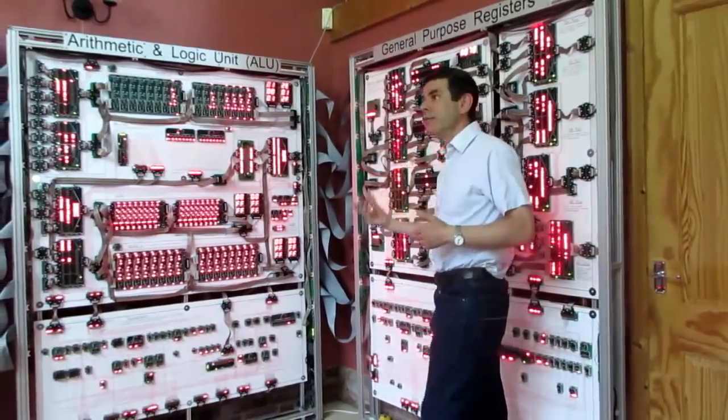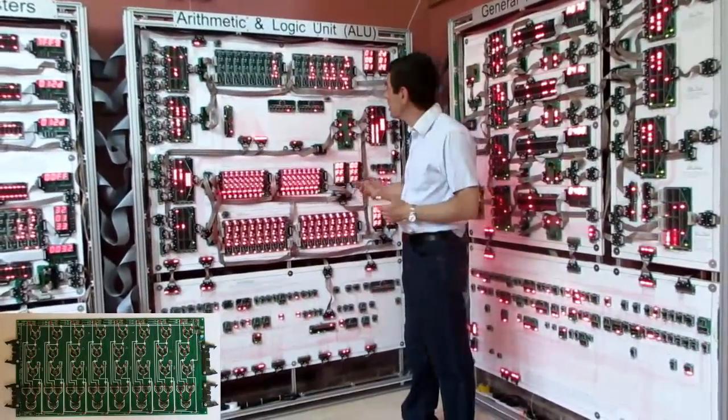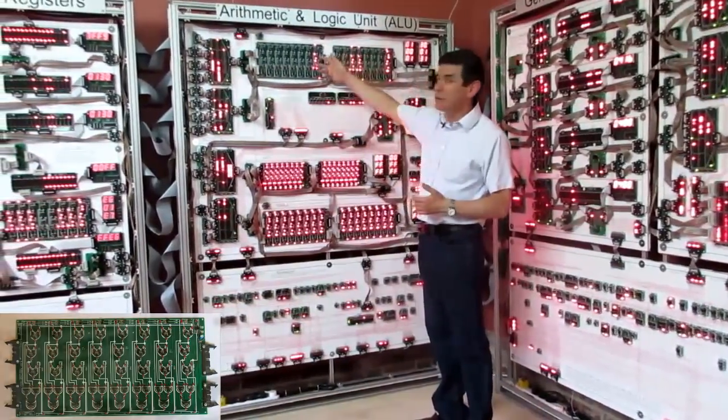The next main functional block in the processor is the ALU, which carries out all of the arithmetic and logic functions, and that's this area here. So this is the main ALU and we have a second adder up here.